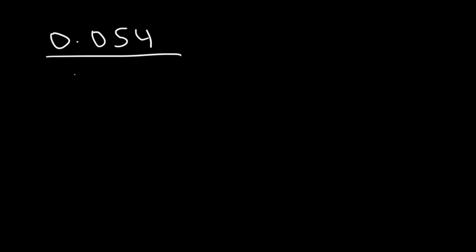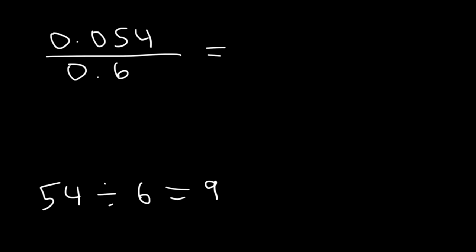So let's try another example. Let's divide 0.054 by 0.6. Now, 54 divided by 6 is 9. On top we have three digits, and on the bottom we only have 1. 3 minus 1 is 2, so the final answer should have two digits. So this is going to be 0.09.